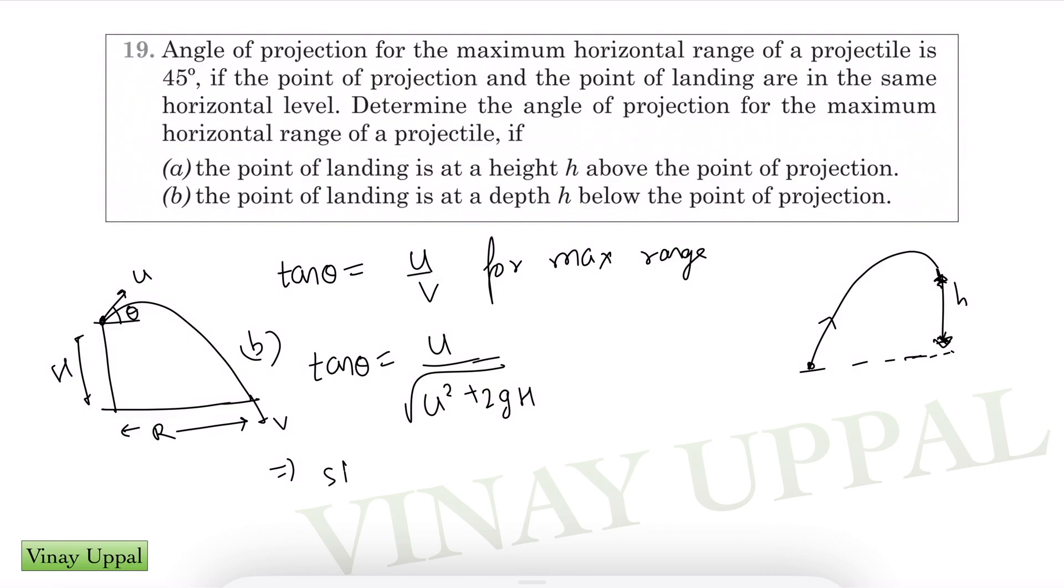So that's pretty straightforward to get. Once you get tan theta, you can get sine theta as u divided by root of u squared, 2u squared plus 2gh. So that is your answer for part b.